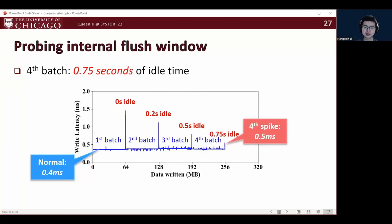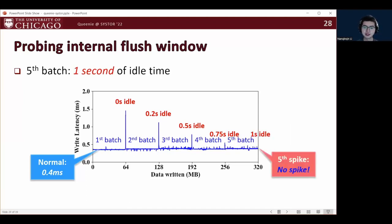For the fourth batch, as we inject 0.75 seconds of idle time, the spike becomes very close to the latency of a normal write. And finally, as we increase the idle time to one second, the fifth batch sees no latency spike. This concludes that this internal flush window is one second, meaning that it is able to softly empty its write buffer in a second.